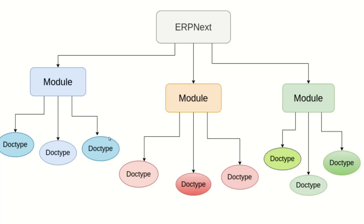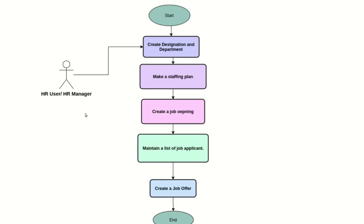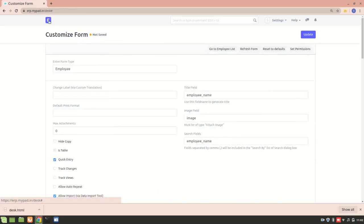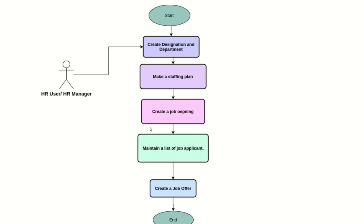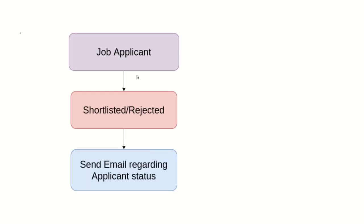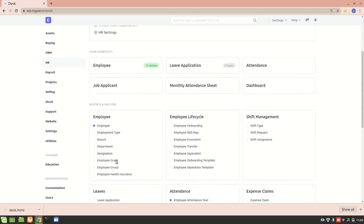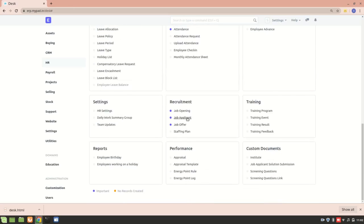Now let's go to our problem statement — creating a notification. In ERPNext, the HR manager or HR user is responsible for creating designations and departments, then creating a staffing plan and a job opening. Once the job opening is created they'll receive applicants. What I want is: once a job applicant is shortlisted or rejected by the HR manager, an email should be triggered to the applicant regarding their status.